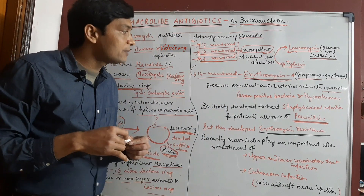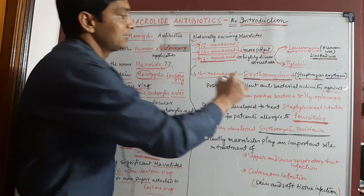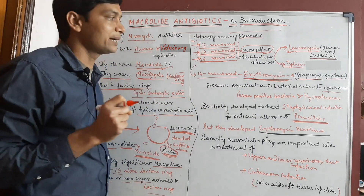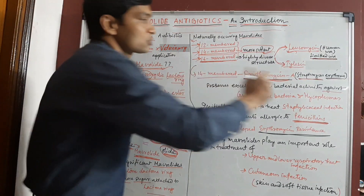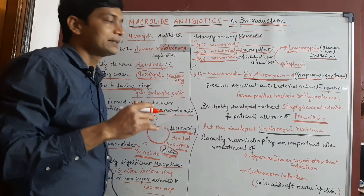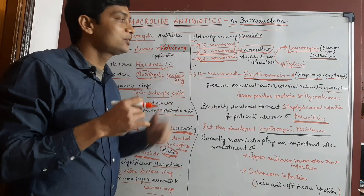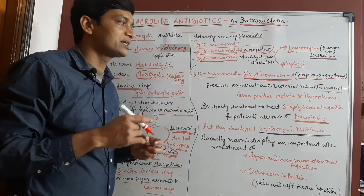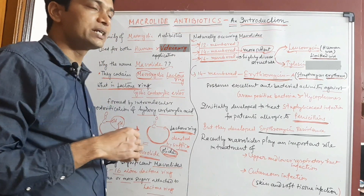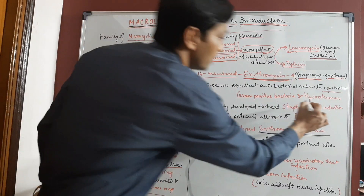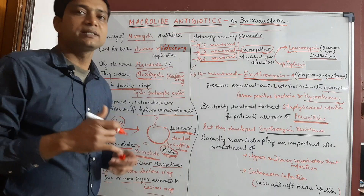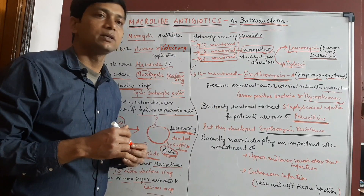Among 14-member macrolides, erythromycin A was the first macrolide antibiotic, discovered from Streptomyces erythraeus. Erythromycin A possesses excellent antibacterial activity against gram-positive bacteria and mycoplasmas. It was initially developed to treat staphylococcal infections in patients allergic to penicillins.